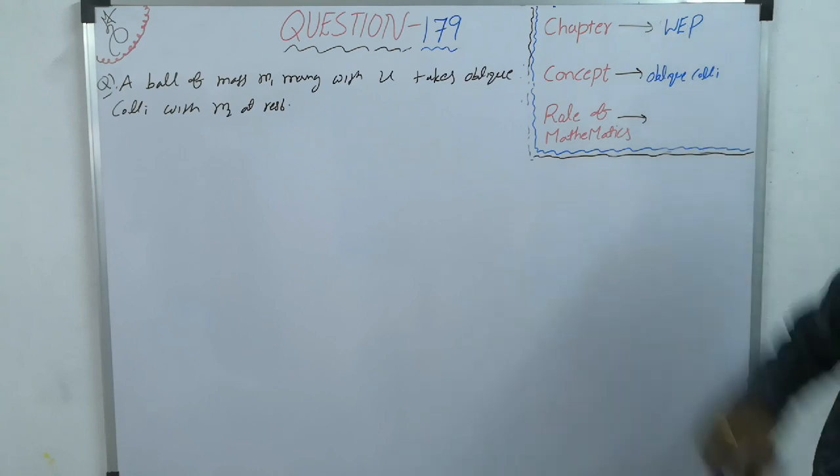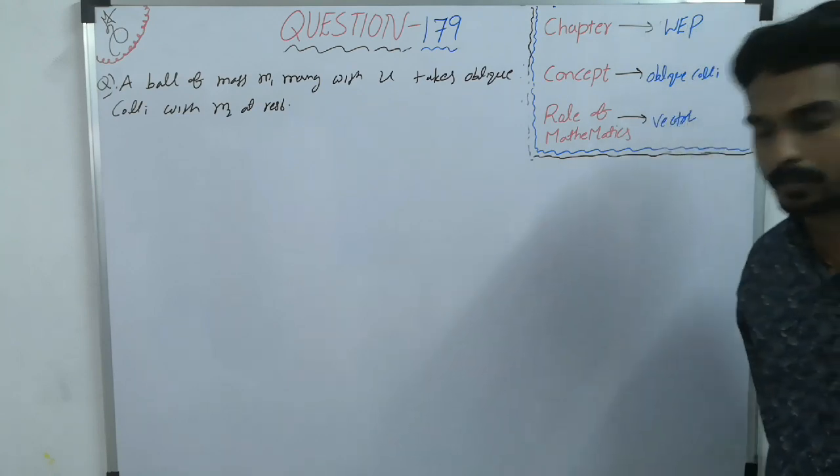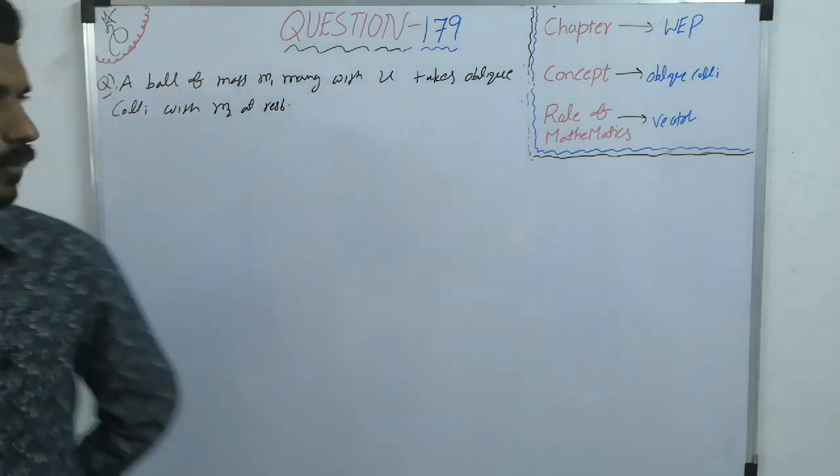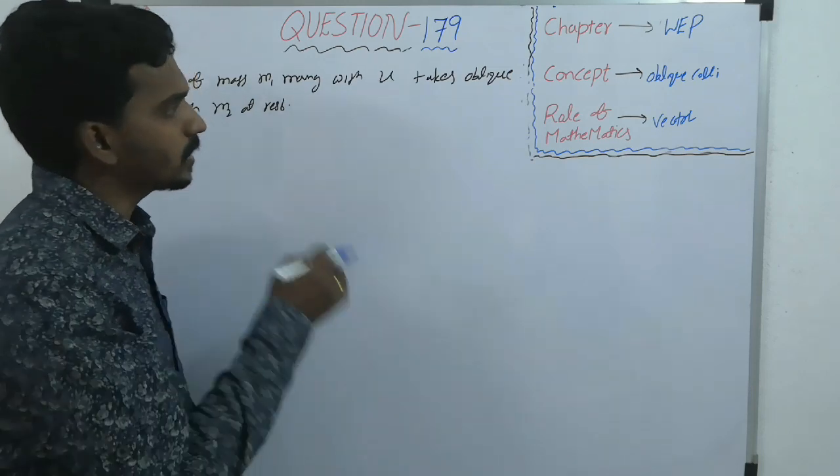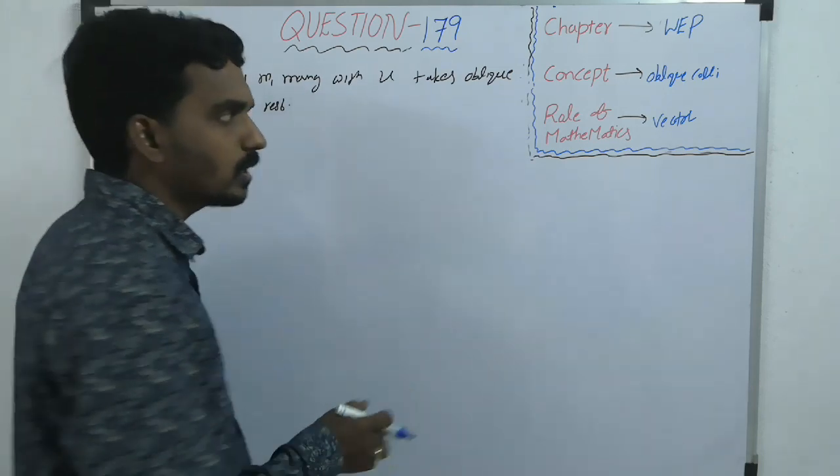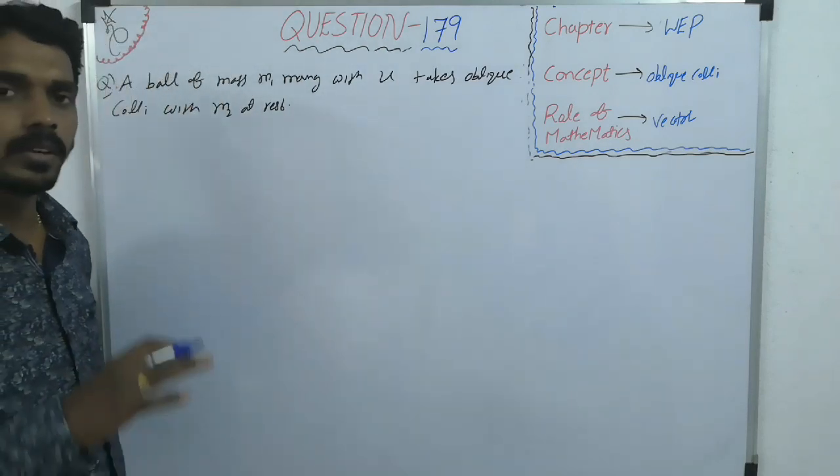In work energy power, you will have to use vectors because in collision you must use conservation of linear momentum. And linear momentum is a vector quantity, so you must use vector representation, then the confusion will be reduced.